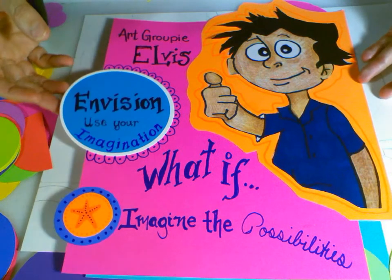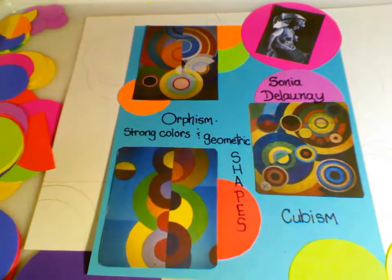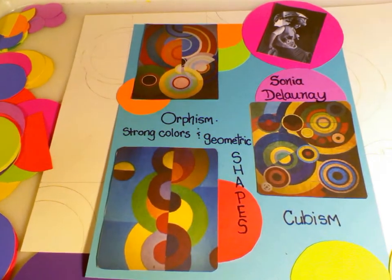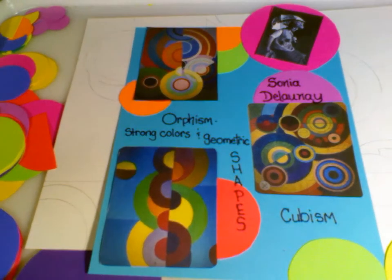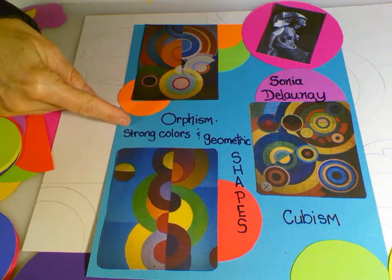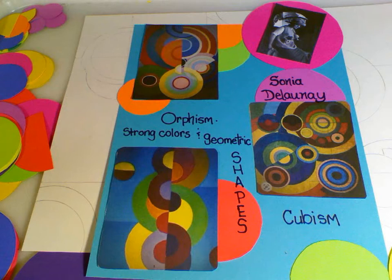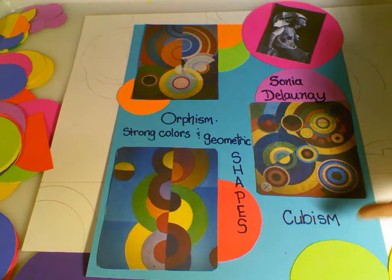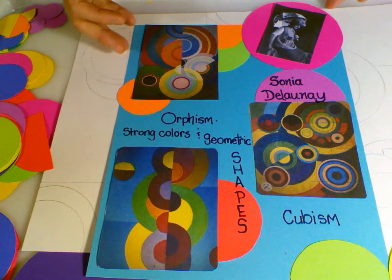So our famous artist that we're going to be working with is an artist from the 1800s. Her name is Sonia Delaunay. She created or I should say co-created the movement of art called Orphism, strong colors and geometric shapes. She was very influenced by cubism.